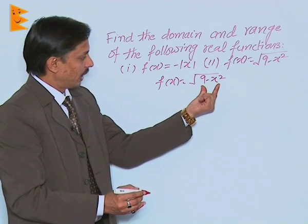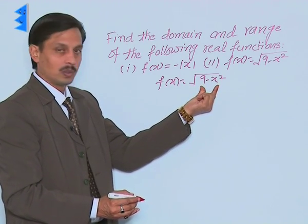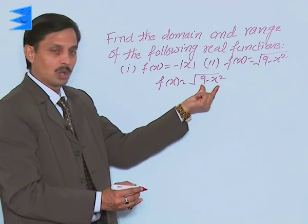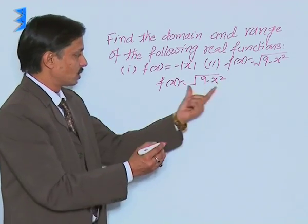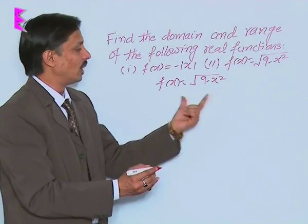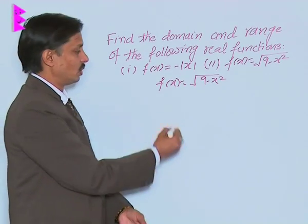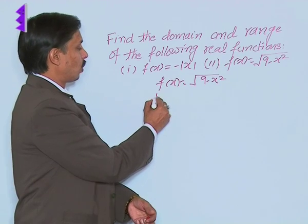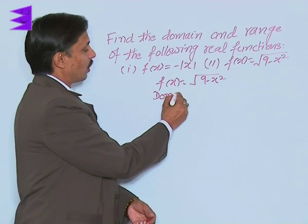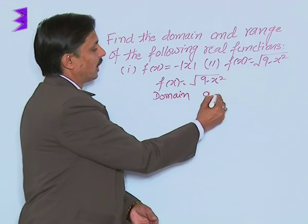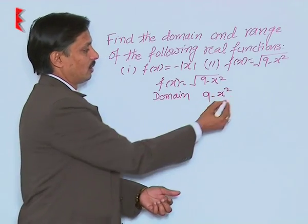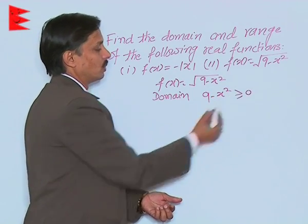Here, this value should not be less than zero. This value should be either zero or more than zero, because there will be no real value if 9 minus x square is less than zero. So to calculate the domain, we should take that 9 minus x square must be greater than or equal to zero.